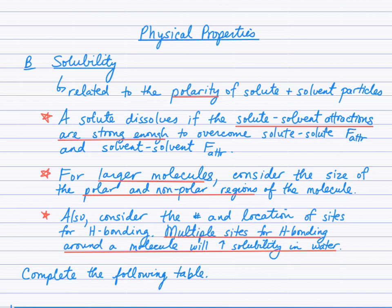Secondly, for larger molecules, you may not be able to classify a molecule as being polar or non-polar because of the size of the molecule. There may be a non-polar region and a polar region. You consider the size of these polar and non-polar regions. If there's a greater non-polar region, then it's expected to be less soluble in water and more soluble in oil.